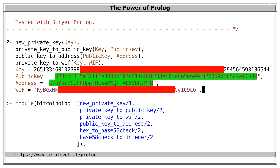Addresses and public keys can be safely shared with everyone, but private keys must be kept secret regardless of the format in which we store them, because everyone who has the private key can spend all Bitcoins that are sent to this address.